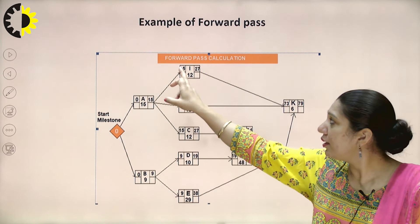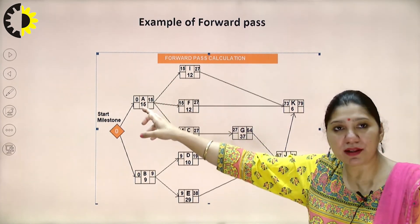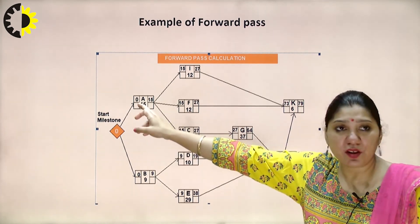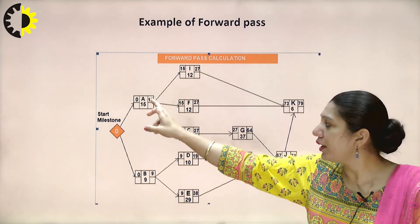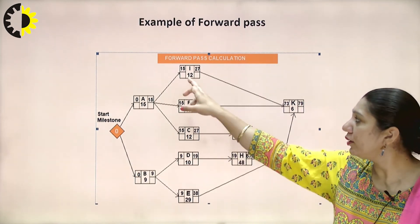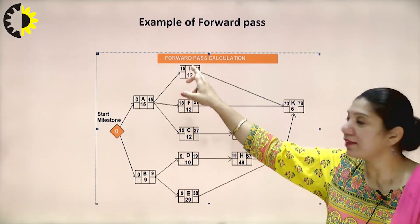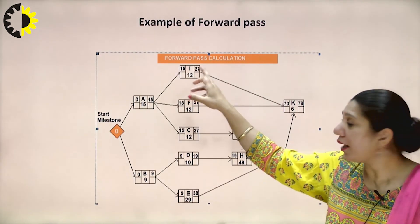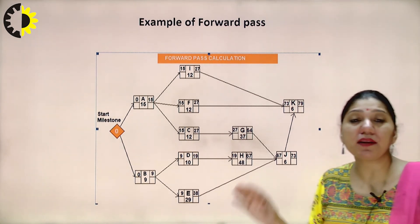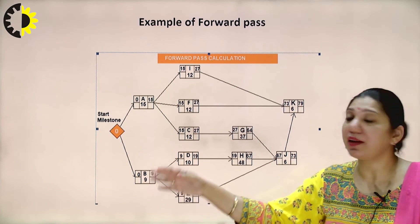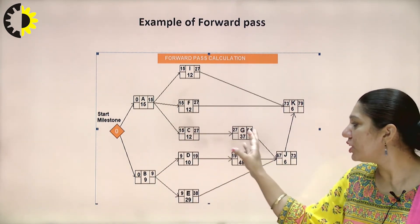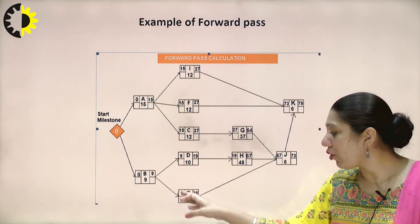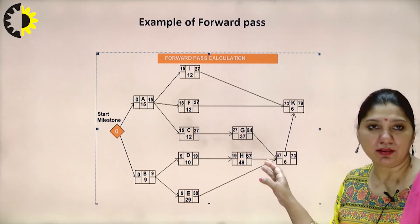The forward pass diagram shows early start and early finish for each activity. Initially taking 0 value, activity A takes 15 days, so 0 plus 15 equals 15. That 15 carries forward to the next activity — activity I takes 12 days, so 15 plus 12 equals 27. All activities — A, F, C, G, B, E, D, H — have their own durations, and the previous cumulative value is added to the current duration and forwarded.